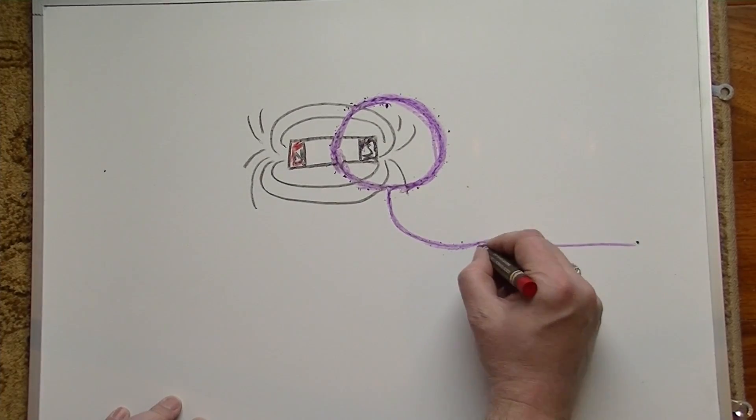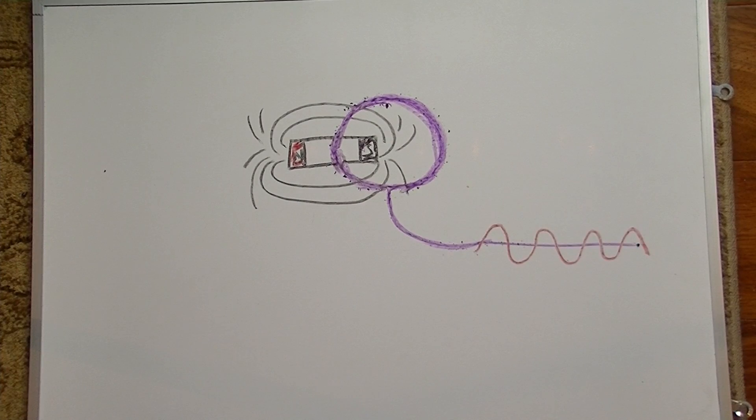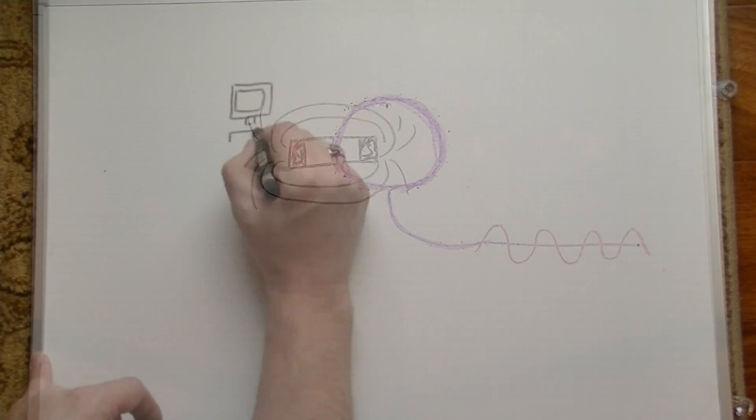This same principle is used in guitar pickups to generate the notes of a guitar. Here the mains transformer was the source of the hum, with its 60 cycle 120 volt AC signal being induced into the nearby ground loop and heard as a 60 cycle hum.